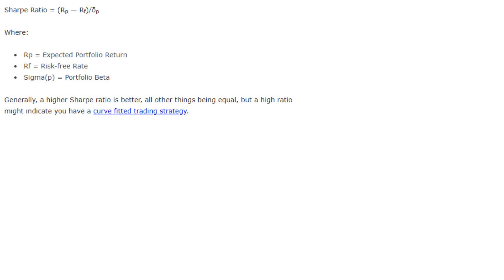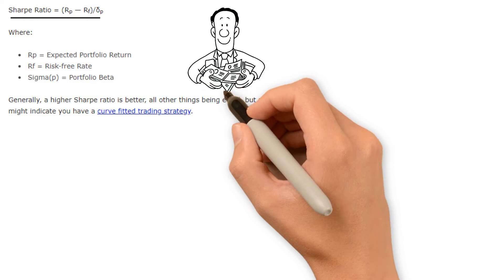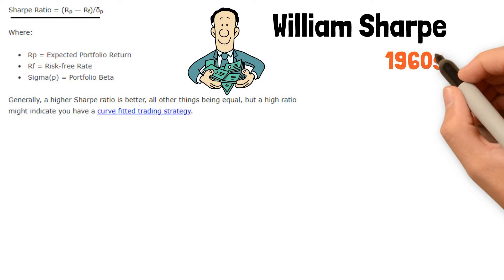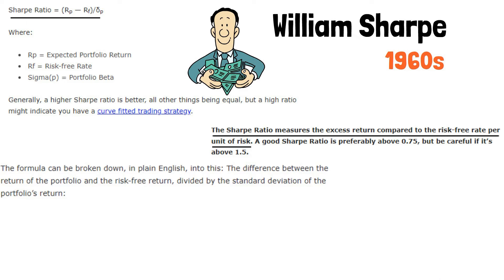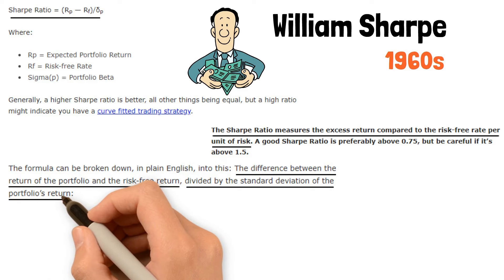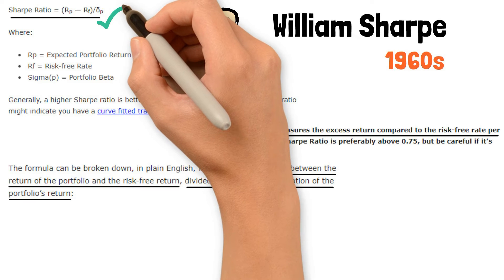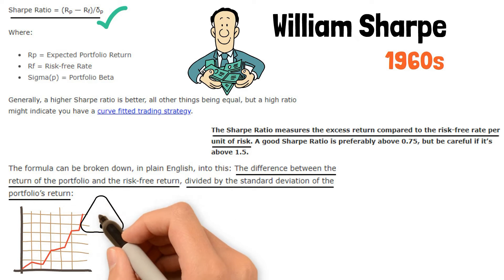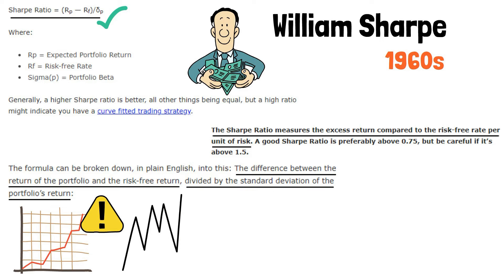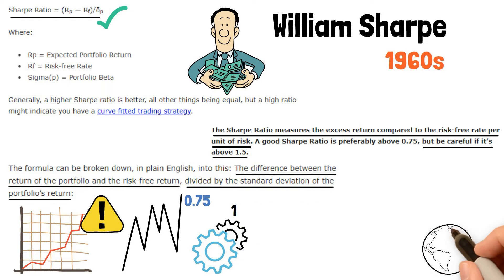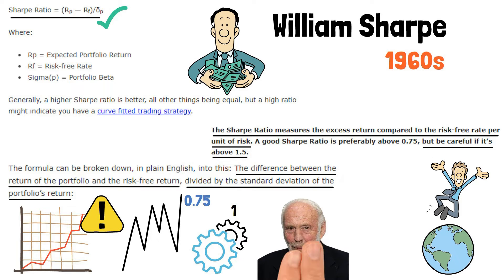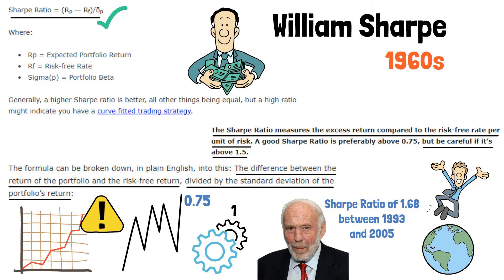Let's look at the most famous risk-adjusted return ratio, the Sharpe Ratio. The name is given by its inventor, William Sharpe, who developed the ratio during the 1960s. The Sharpe Ratio measures the excess return compared to the risk-free rate per unit of risk. You take the difference between the return and the risk-free treasury rate and divide by the standard deviation of the returns. The idea is that you should expect higher returns to compensate for increased risk. A good Sharpe Ratio is preferably above 0.75, but in practice very few manage a ratio above 1. We consider a Sharpe Ratio above 1.5 as extraordinary. For example, the most successful hedge fund in the world, Jim Simon's Medallion Fund, has a Sharpe Ratio of 1.68 between 1993 and 2005.